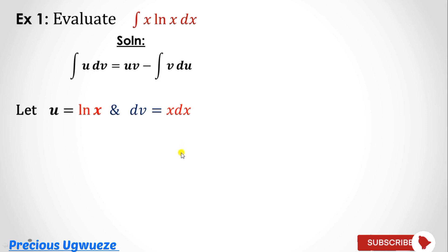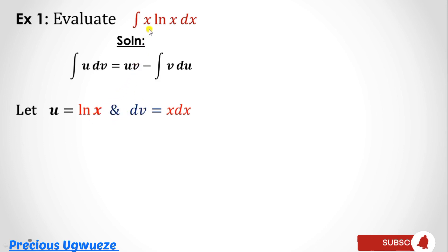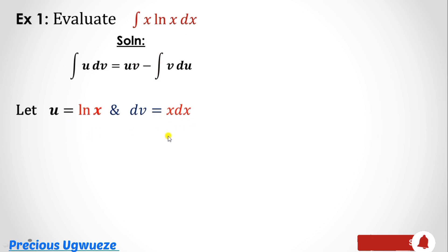You should choose u to be the one that is easily differentiable, and dv to be the one you can easily integrate. The dv is more important because it takes more effort to integrate than to differentiate. Here, I can easily integrate x and easily differentiate ln(x), so I choose u = ln(x) and dv = x dx.